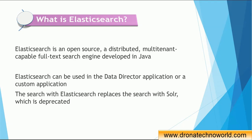Before jumping directly into the architecture, we should know what Elasticsearch is. Elasticsearch is open source, developed by a community and available for anyone to use. It is mostly used in distributed environments and if you need multi-tenant capability in order to search full text. In such cases we can use Elasticsearch. Multi-tenant means we can deploy Elasticsearch on multiple servers and multiple nodes to achieve better performance.